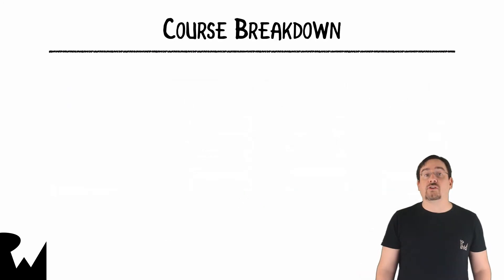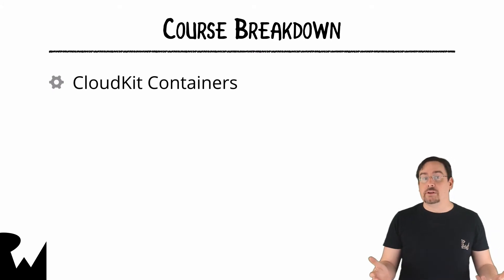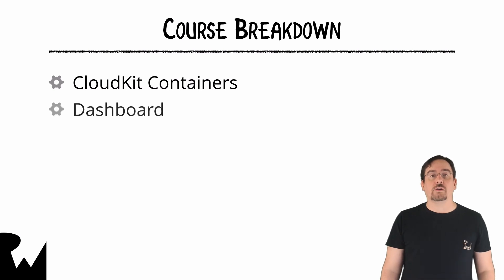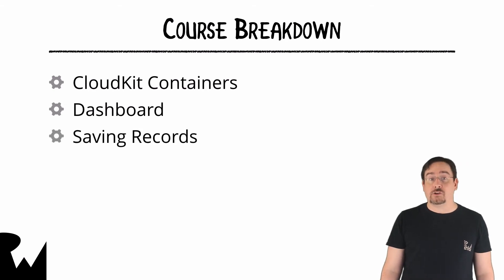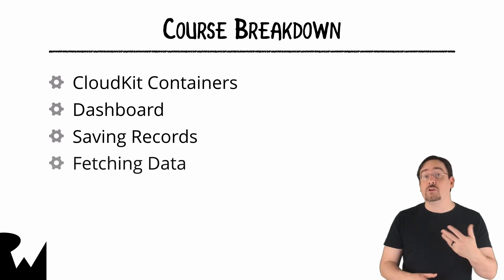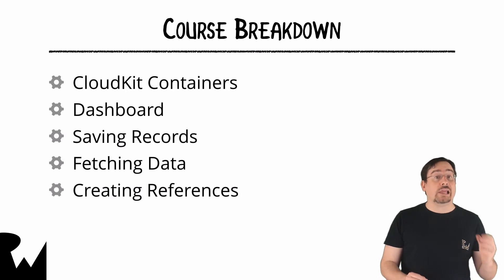This course is broken down into 11 parts. First you'll learn how to incorporate CloudKit into your app, how to access the container and then the databases. Next you'll learn about the CloudKit dashboard and how it is used to monitor usage and model data. Then you'll learn how to save records to your database, and of course once you save your data you'll want to know how to read it back. Next you'll learn how to create relationships between your data by means of references.